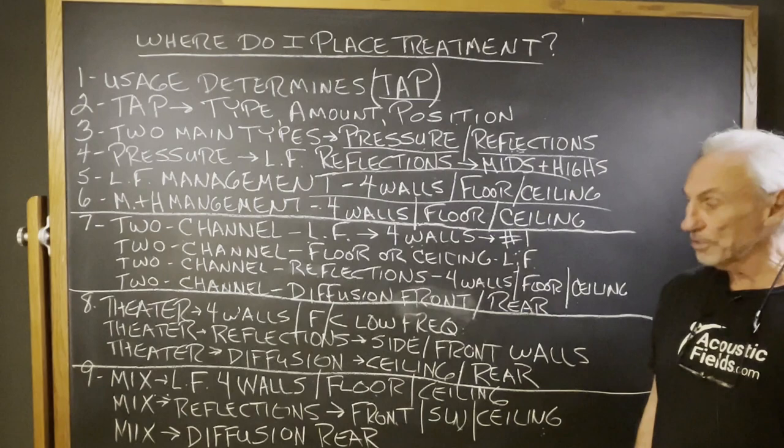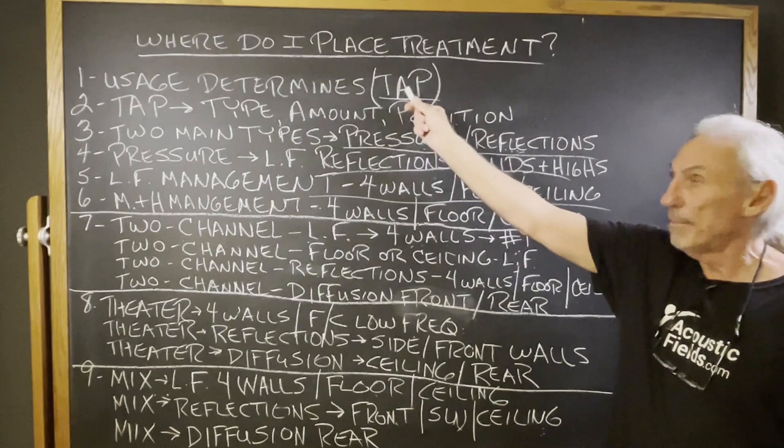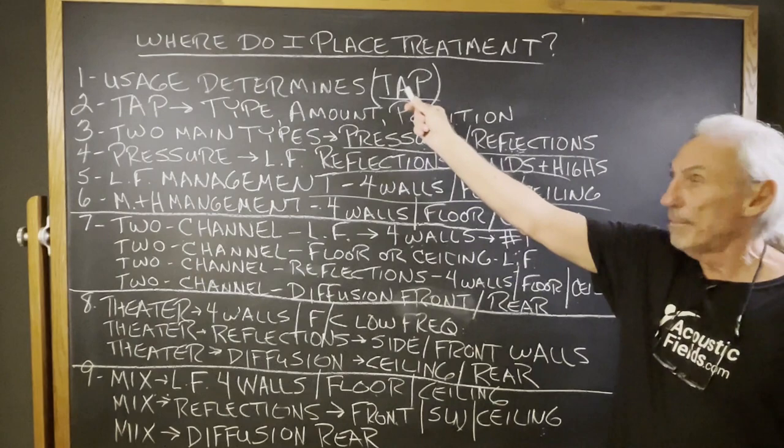So where do I place treatment? Follow TAP — type, amount, position. What type are you going to use after you identify either a pressure or reflection issue? How much treatment? It's all about square footage when it comes to low frequency management, and where are you going to place it.